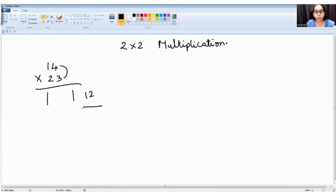The middle portion of the answer is done by cross multiplication and addition. So 1 x 3, 1 x 3 plus 4 x 2. 1 x 3 is 3 plus 4 x 2 is what? 8.